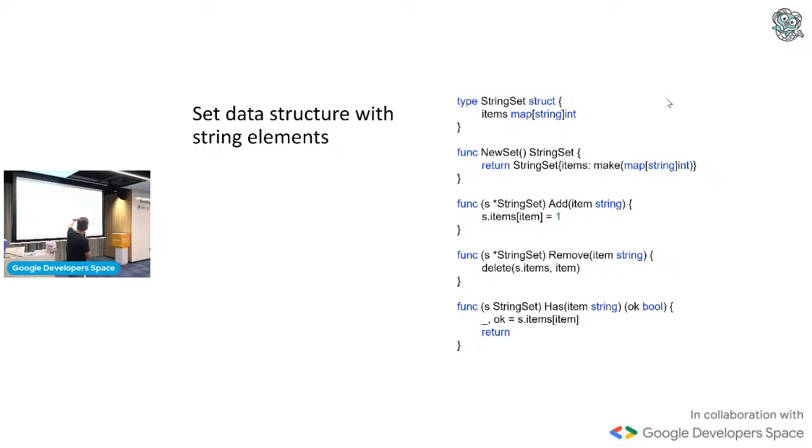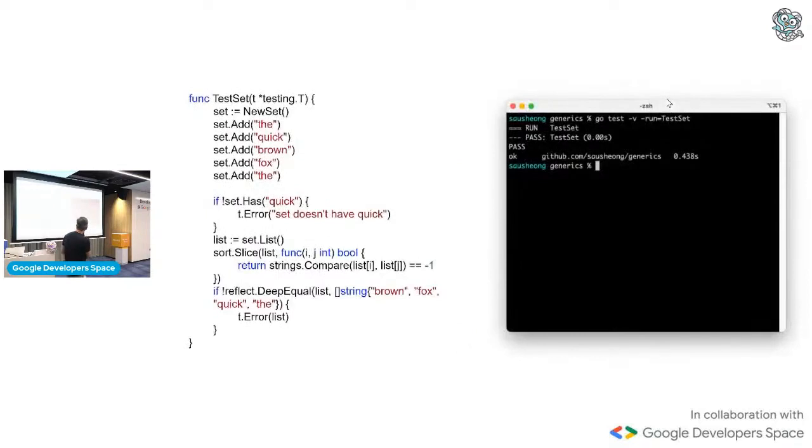Again, I have a string. So I ignore the value altogether. It doesn't really matter the value because I am only interested in the key. So items map string. So these are all strings. And when I add, if I add a string, I just put an int value. I will never use it anyway. Okay? So that's the set data structure. Very quickly, this is how I use it. I add string. Okay? And I check. It looks a bit complicated. But basically, because it's unordered, I need to sort it first and then before I compare it. But that's basically it, right? So that's testing the set.